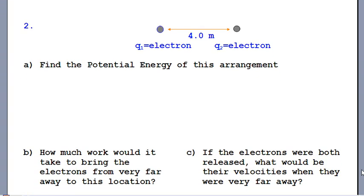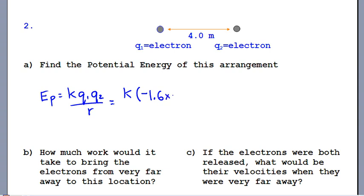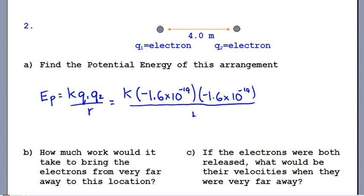Example two: two electrons sitting 4 meters apart. Using EP = K·Q1·Q2 / r, with K = 9×10⁹, and both electrons having charge −1.6×10⁻¹⁹ C, divided by 4 m. Trust the math — two negatives multiply to give a positive answer. There's definitely energy in that arrangement; those electrons don't like being near each other and will fly away if released.